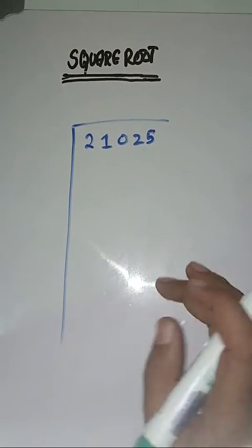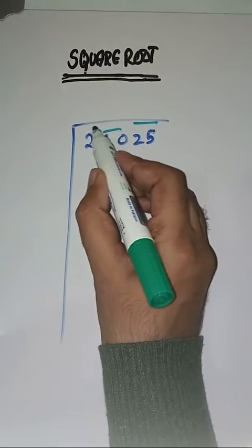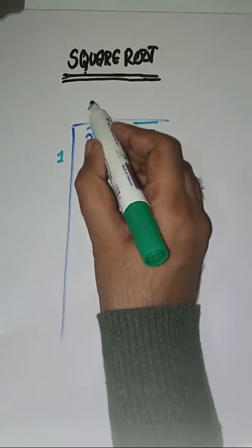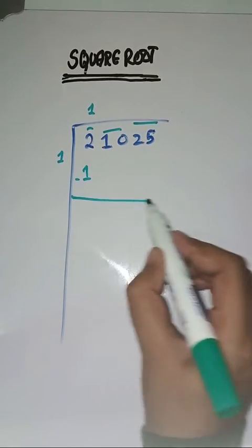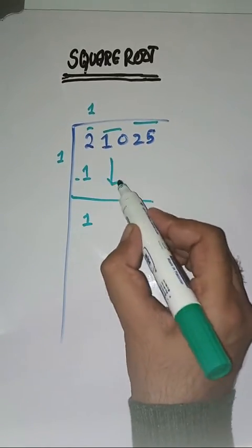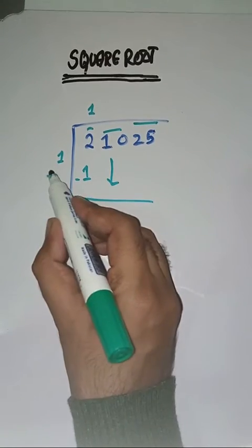So we will start with ones. One minus one, we have one. Next pair is ten, bring it down. Now do one plus one which is equal to two.